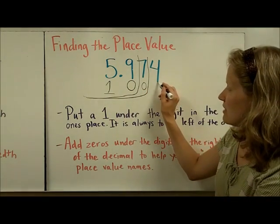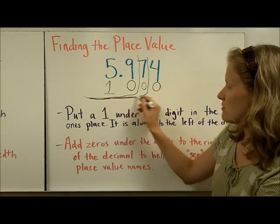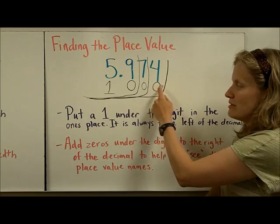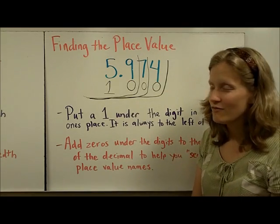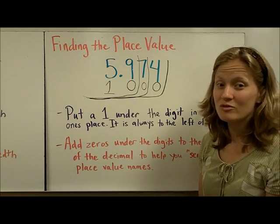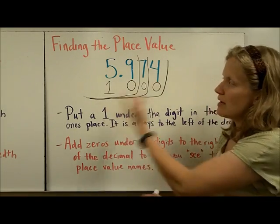And if I add another zero and make another little line, we see that that four is in the thousandths place. So that trick, if you want to always find the ones place and then add zeros, that trick may help you determine the place value names behind the decimal.